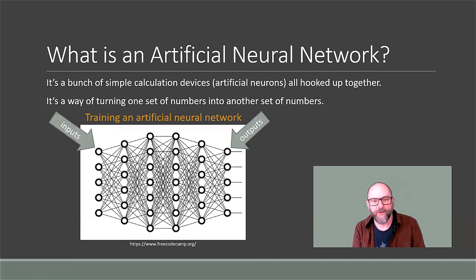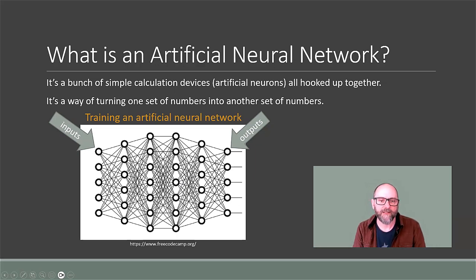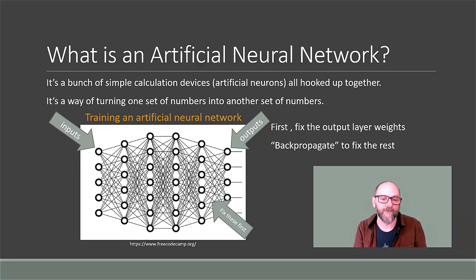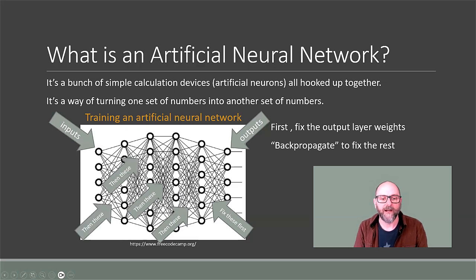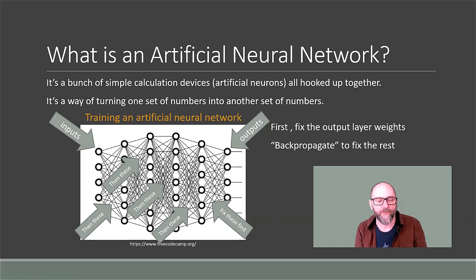To train an artificial neural network, you have your inputs and desired outputs. You can adjust the output layer weights directly. Fixing the rest of the weights is trickier — it stalled neural network development in the 50s and 60s. In the 70s and 80s, it was discovered that there's a process called back propagation, where we go back one layer at a time fixing the weights based on how much error the neuron was responsible for in the previous layer. Back propagation will often allow us to find a pretty good solution to whatever problem we're throwing at the network.